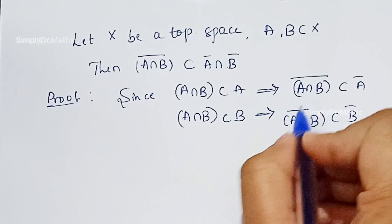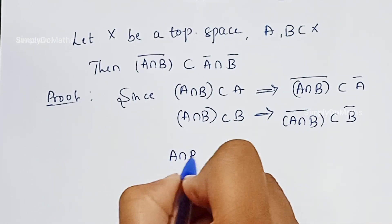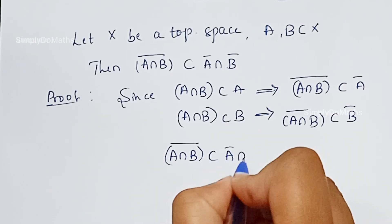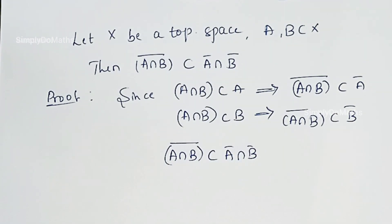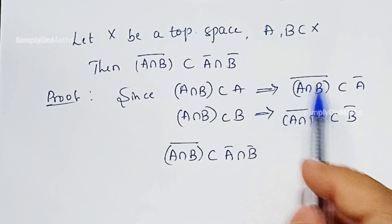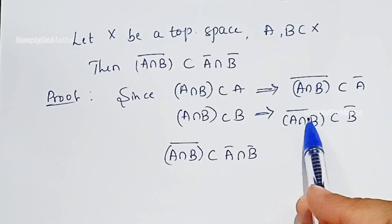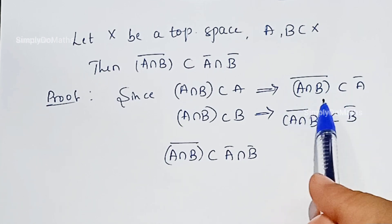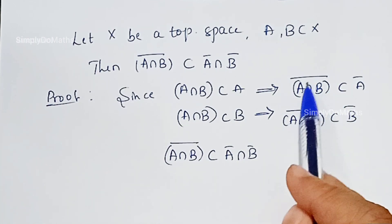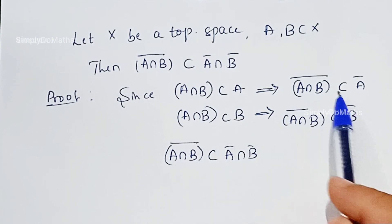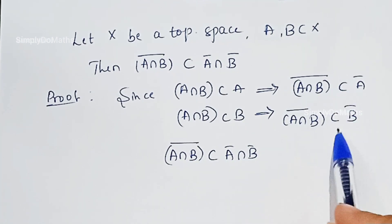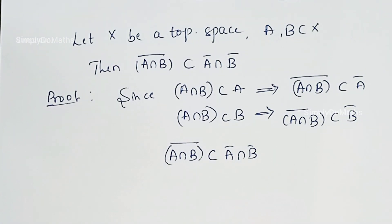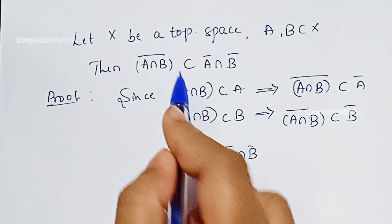Combining these two, we get that the closure of A intersection B is a subset of A-bar intersection B-bar. Because intersecting both sides, closure of A intersection B, intersected with itself, is just closure of A intersection B. So this proves the result.